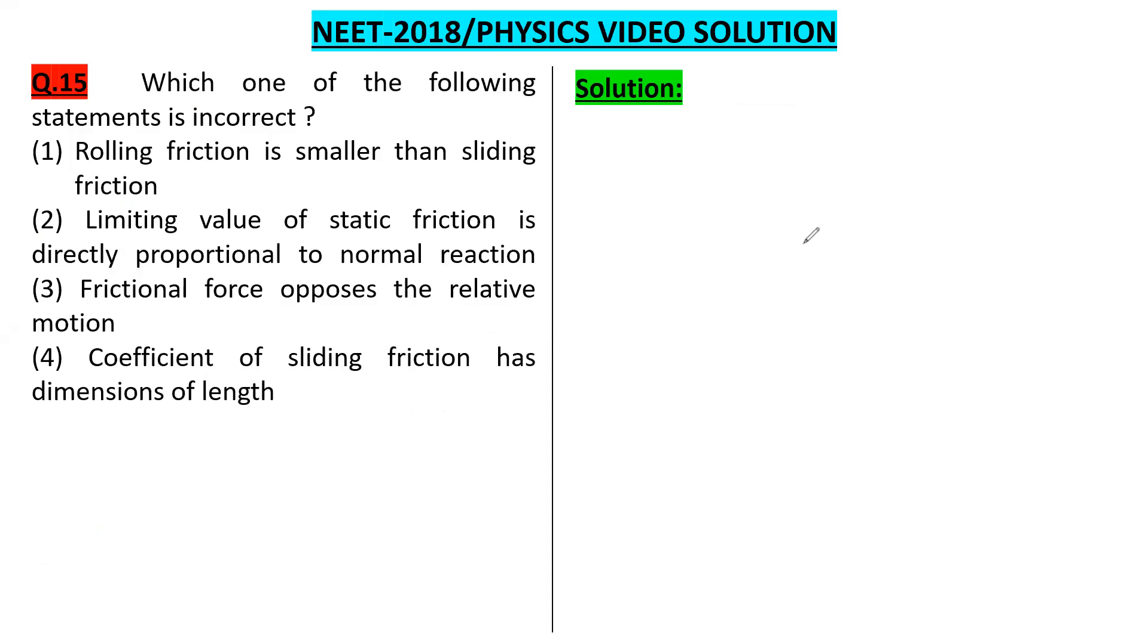In this question, we have to find the incorrect statement. Rolling friction is smaller than sliding friction - that is correct. That's why we use tires. The tires are of this shape, not this shape, so this makes the friction lesser as compared to sliding. So statement one is correct.